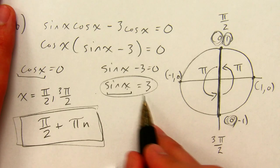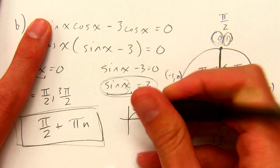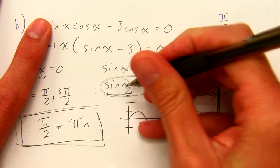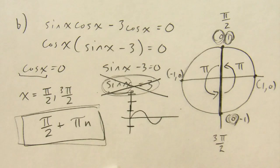Remember when we graphed y equals sine x? The highest it ever gets is 1. The lowest it ever gets is negative 1. It's never getting up here at 3. It's never going to be up there. There is no solution to this equation.